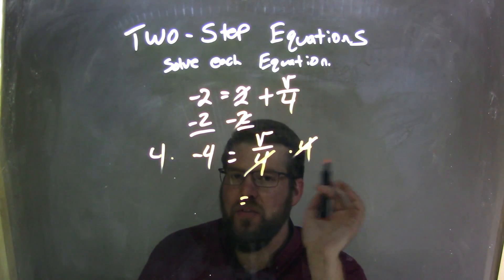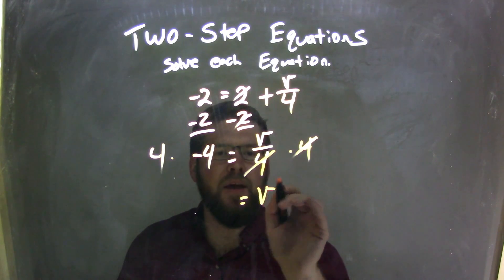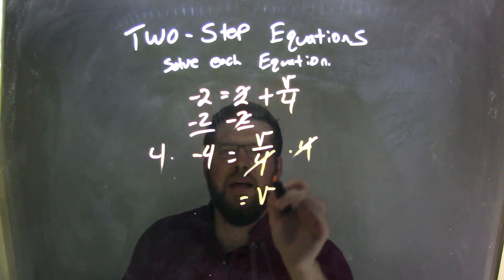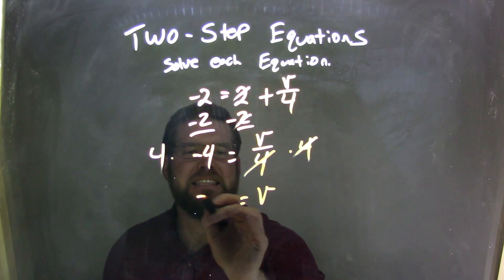Now be careful, there's a lot of 4's here. Don't get confused, take your time. We have v there left, and we have 4 times negative 4 is a negative 16.